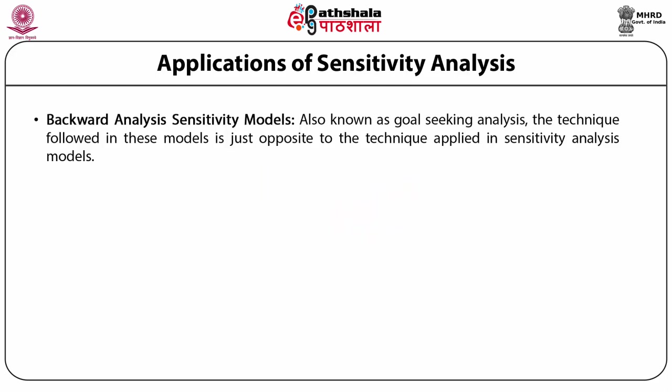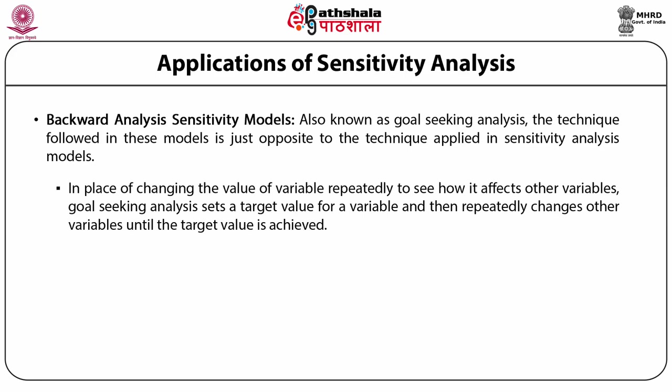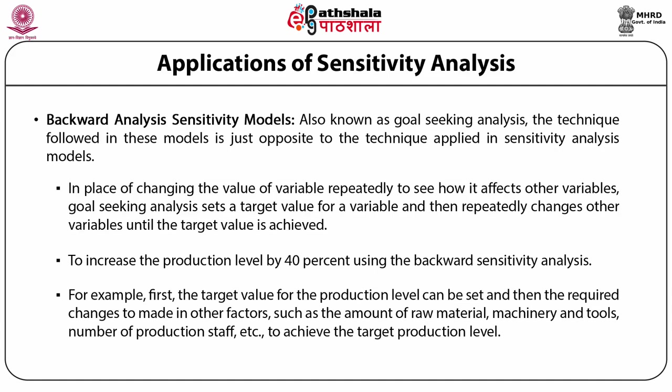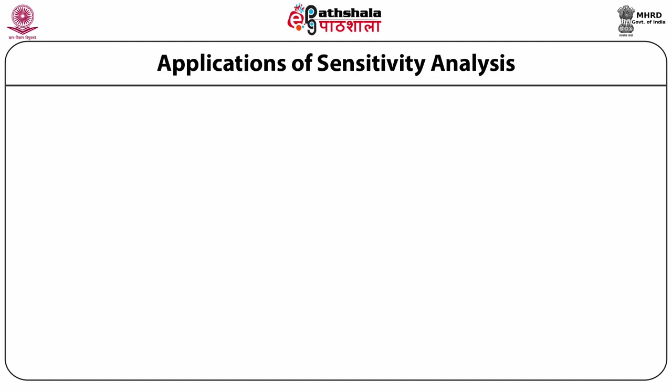Backward analysis sensitivity models, also known as goal-seeking analysis: the technique followed in these models is just opposite to the technique applied in sensitivity analysis models. In place of changing the value of a variable repeatedly to see how it affects other variables, goal-seeking analysis sets a target value for your variable and then repeatedly changes the other variables until the target value is achieved. For example, to increase the production level by 40% using backward sensitivity analysis, the target value for the production level is set first, and then the required changes to be made in other factors — such as amount of raw material, machinery and tools, number of production staff, etc. — are determined to achieve the target production level.